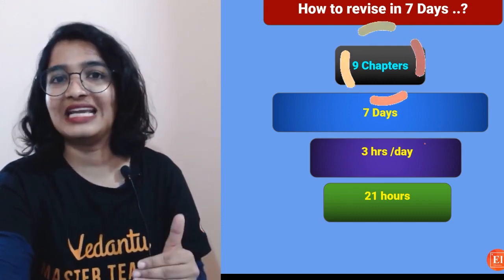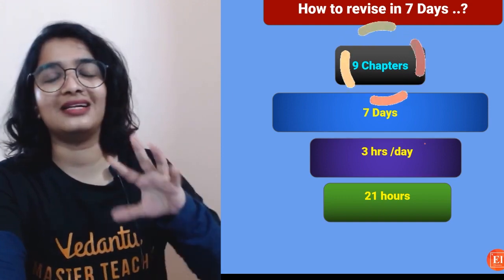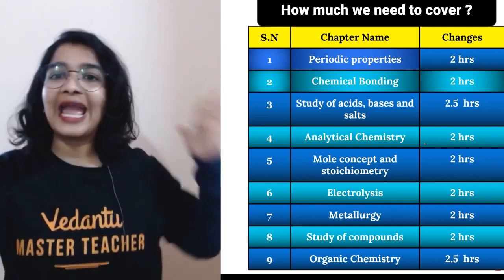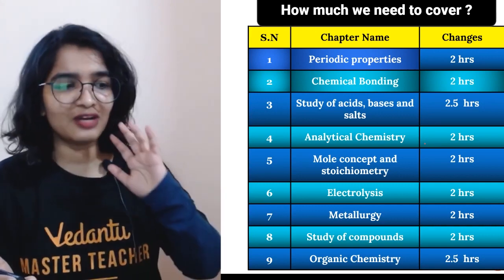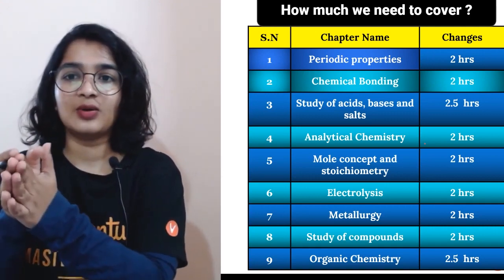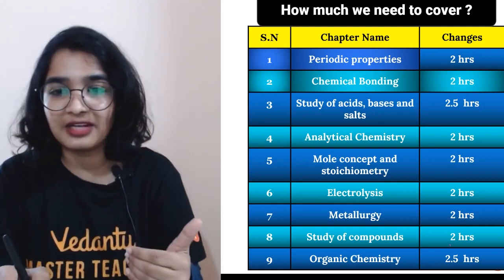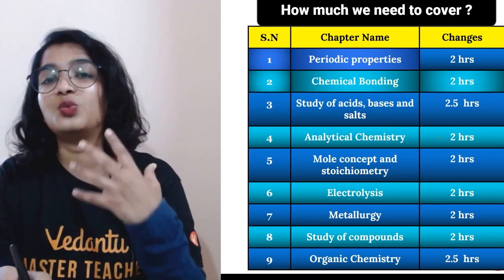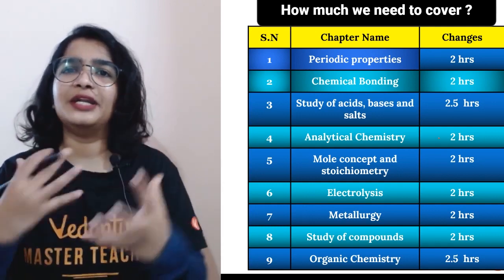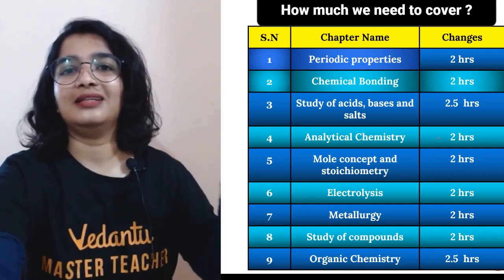The remaining ICSE chapters are: Electrolysis, Metallurgy, Study of Compounds, and Organic Chemistry — that's a lot! For ICSE students, I'm sorry, but you need to dedicate three hours per day, which is 21 hours total. Periodic Properties: two hours; Chemical Bonding: two hours. Remember, this timetable is for revision only — if you don't know the concepts at all, two hours won't be enough. Acids Bases and Salts: 2.5 hours; Analytical Chemistry: two hours. Organic Chemistry requires 2.5 hours because you need to understand why carbon cannot form ionic bonds, covalent bonding concepts, and more.